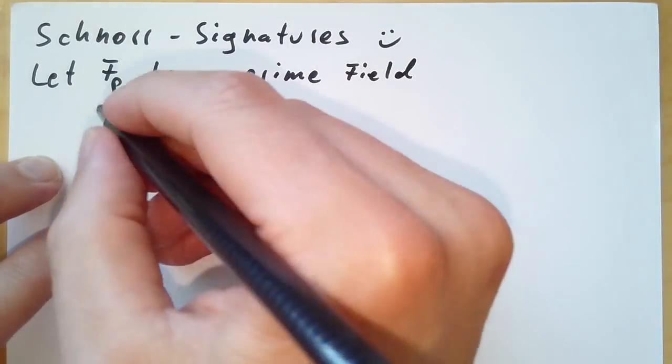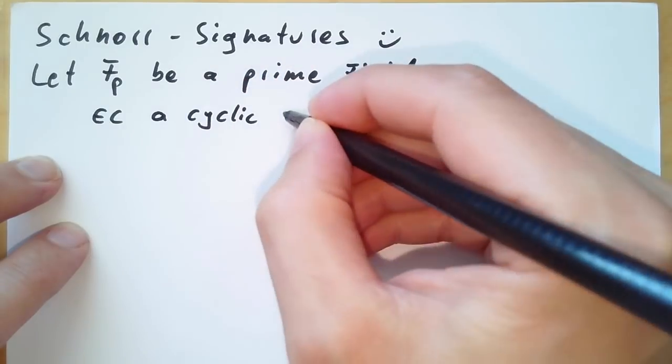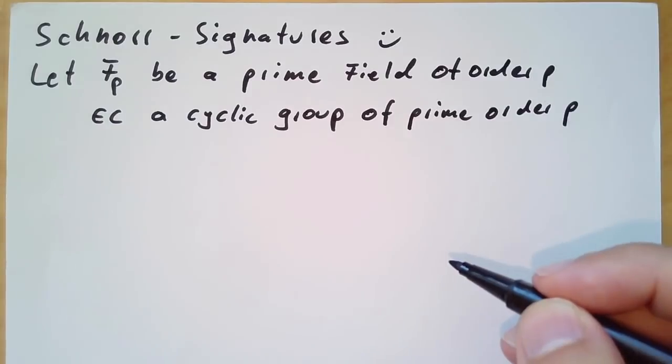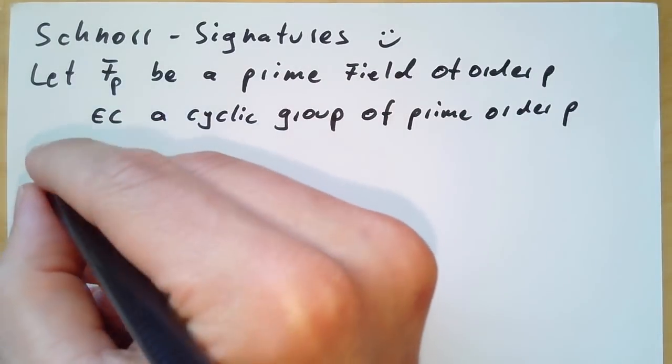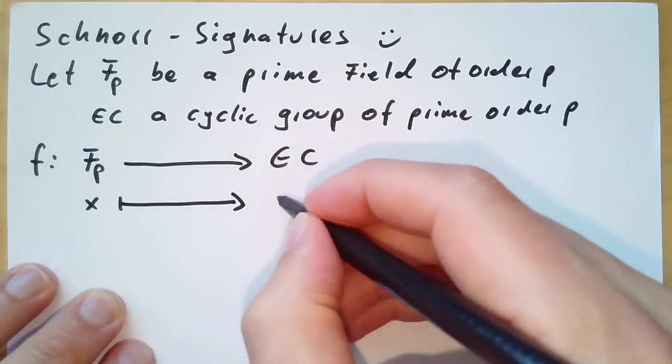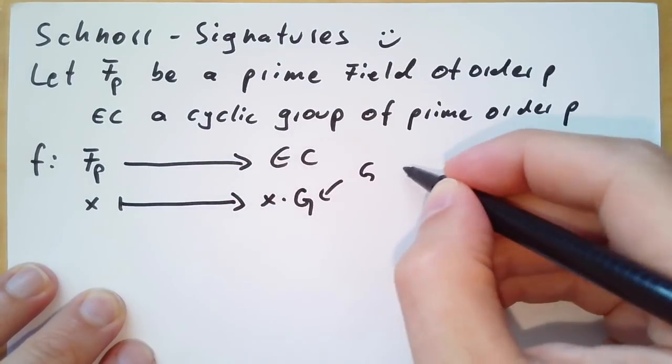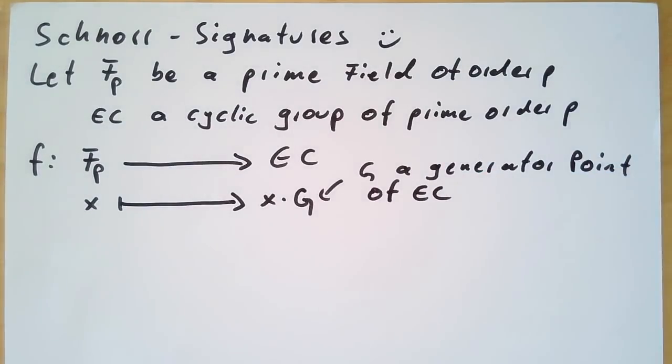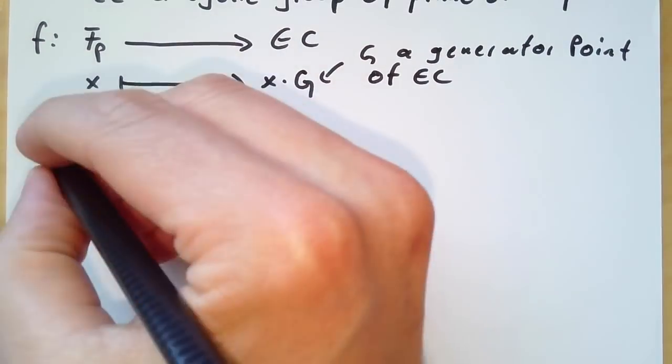Next, we're going to use an elliptic curve, which is just a cyclic group of prime order p, the stuff that you regularly know from Bitcoin. And we have one last mathematical thing we need, which is a mapping from our prime field to the elliptic curve. And when we take a scalar from the prime field, we multiply it with a generator point from the elliptic curve. And that's what we are using all the time.